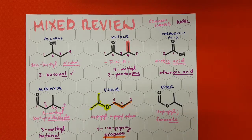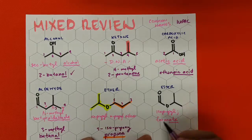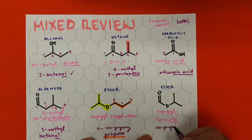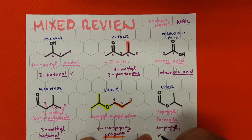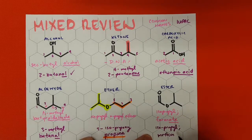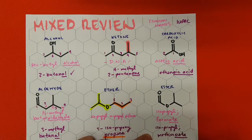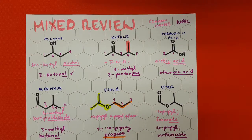Last but not least for the ester, same thing. On the oxygen side we have isopropyl. On the other side, one carbon — methane — but we drop the E and add the ester ending '-oate,' giving us isopropyl methanoate. That's how we do this mixed review covering all these different functional groups and their naming.